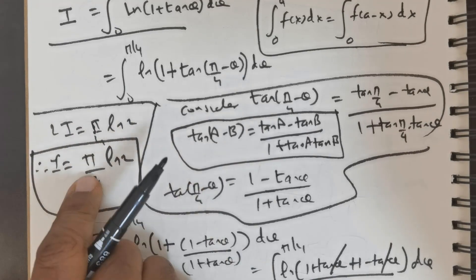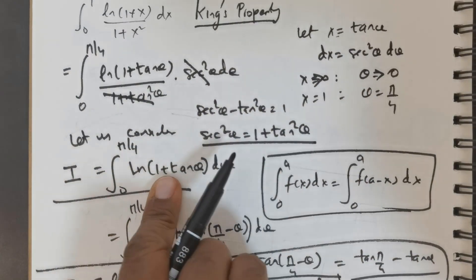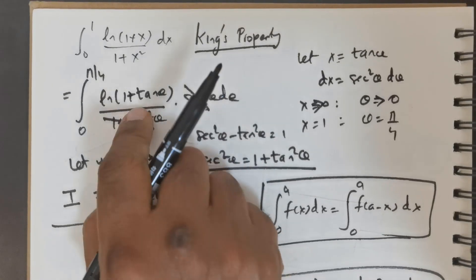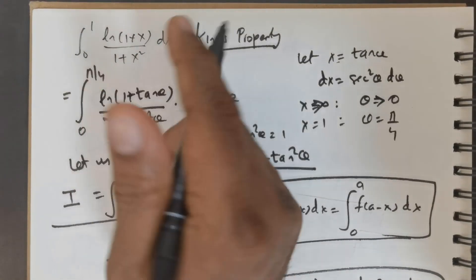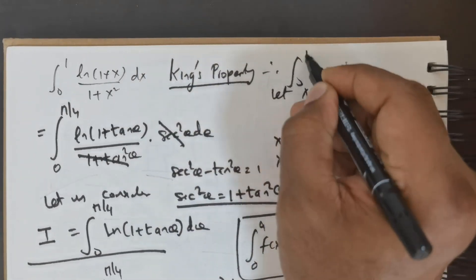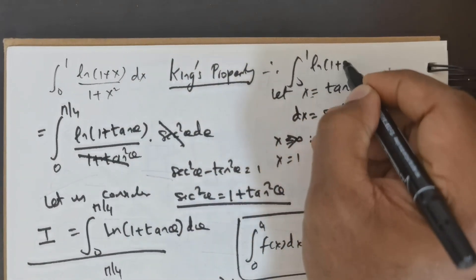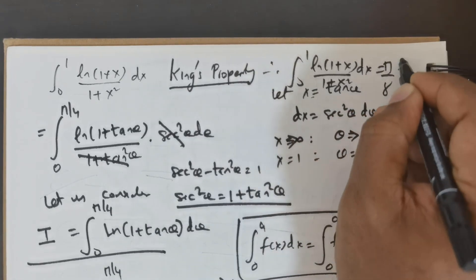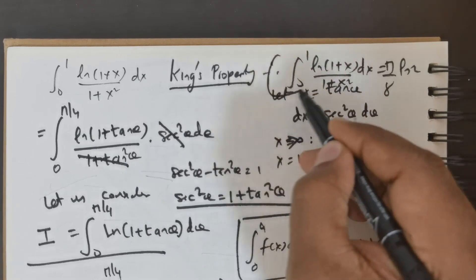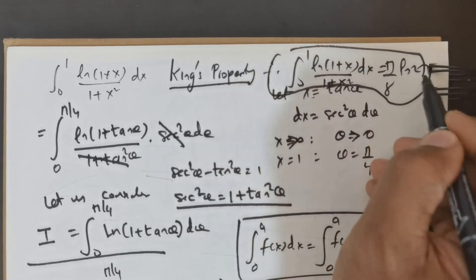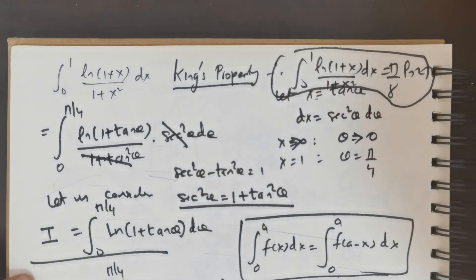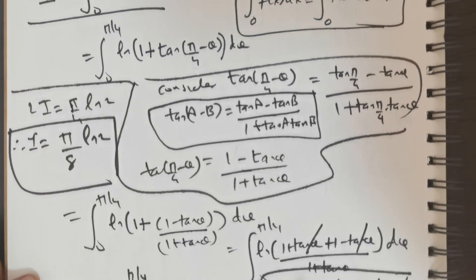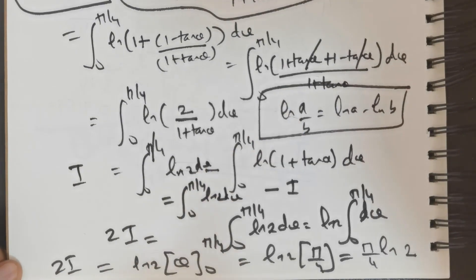So we can safely conclude that the integral from 0 to 1 of ln(1 + x) / (1 + x²) dx equals π/8 · ln 2. That is the solution for this question. I am going to do another method in the next video, so please check that out. Like, share, and subscribe to our channel. Until we meet again, thank you.